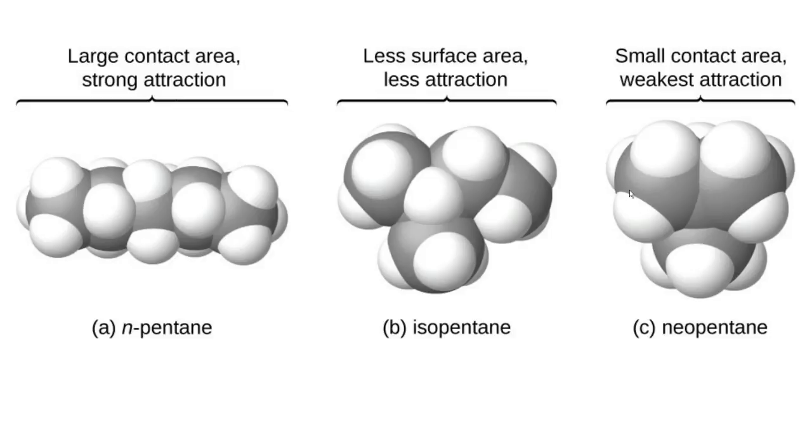So the boiling point of this molecule will be lowest. So neopentane will be having boiling point lower than iso pentane. And iso pentane will be having boiling point lower than normal pentane.